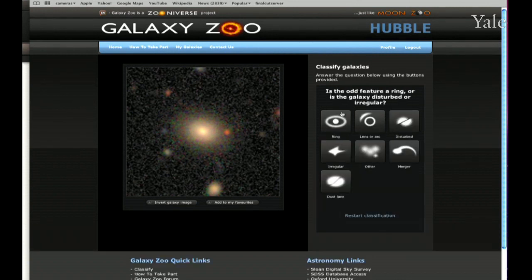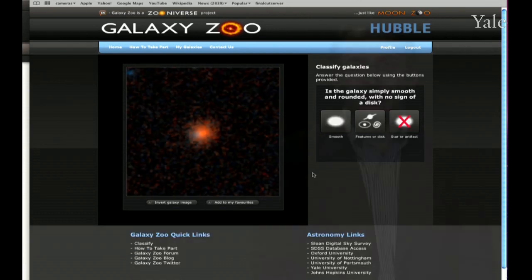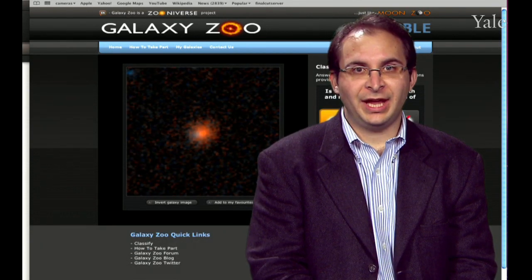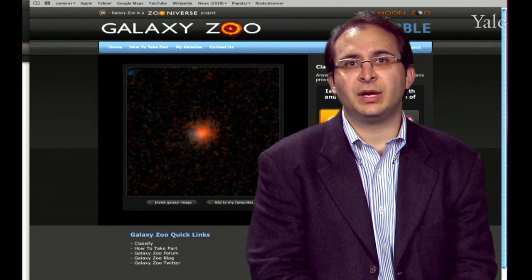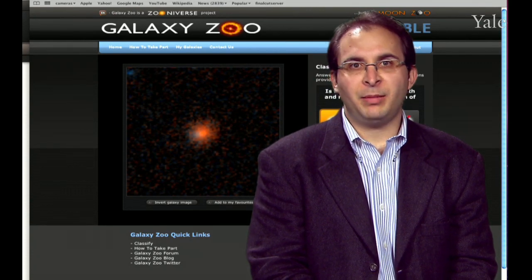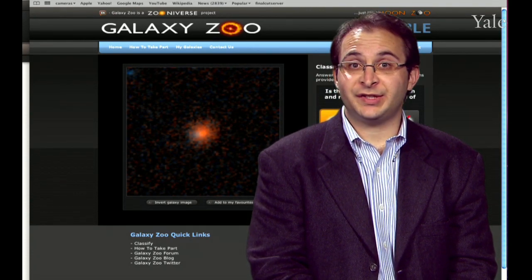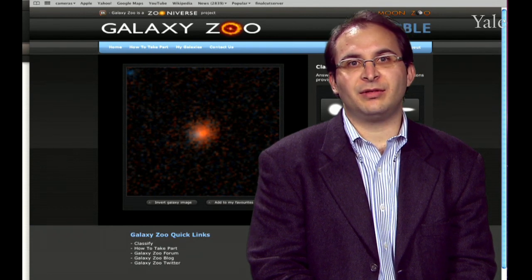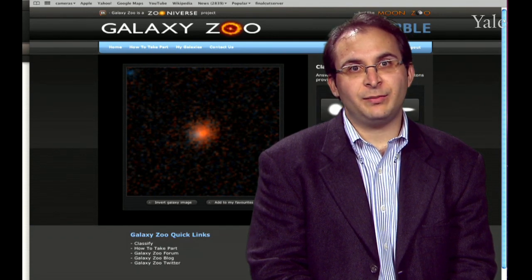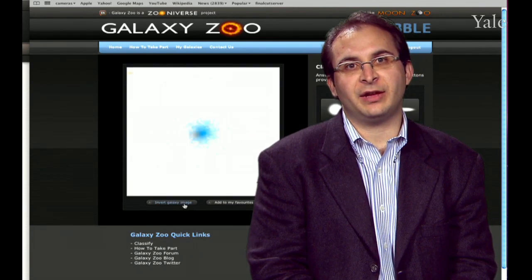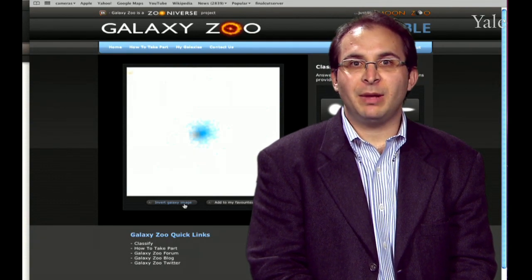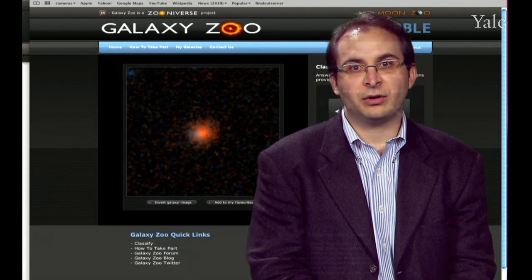When we launched the original Galaxy Zoo, we thought that maybe there's a few dozen or a hundred, or maybe if we're really lucky, a few thousand people across the internet who'd be interested in doing this. And so our expectations for how long it would take us to sort through a million galaxies were very low. We thought it would take many years to do this. Instead, when we launched the website in 2007, within a few hours so many people had logged on wanting to classify galaxies that it actually melted one of our servers and the website was knocked offline.